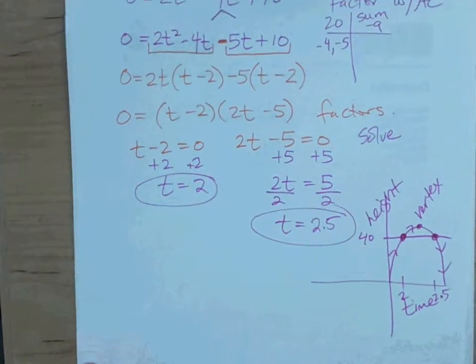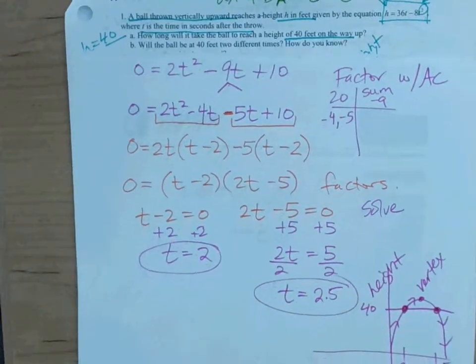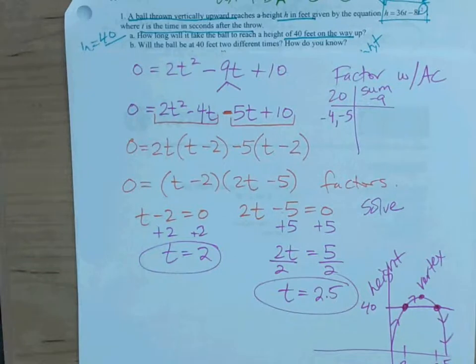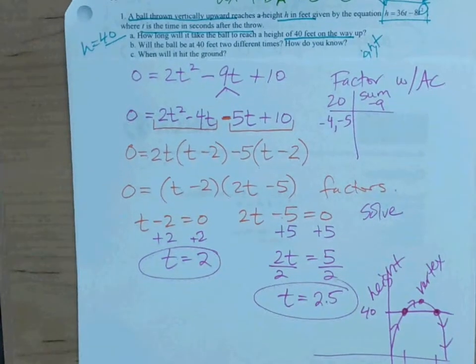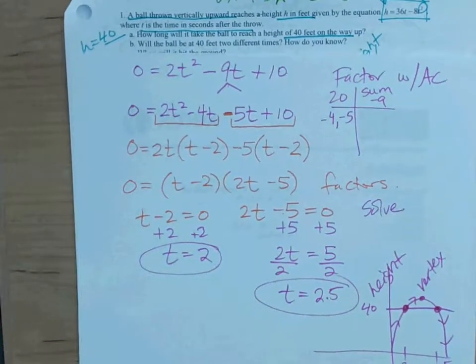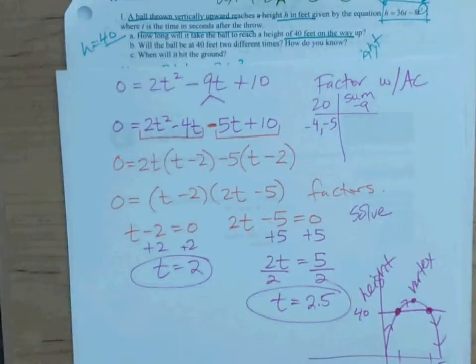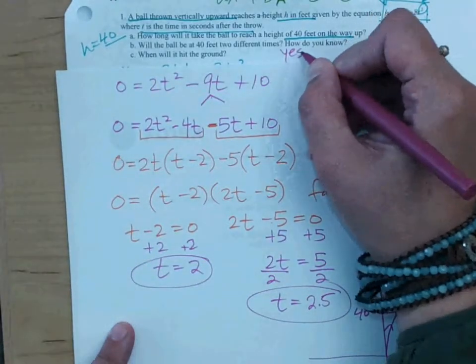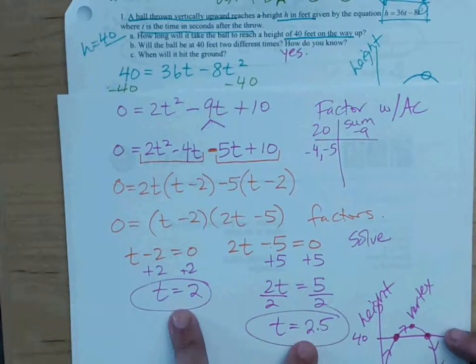Okay, we're not even done with this problem. It's asking more. Will the ball be at 40 feet two different times? What do you think? The answer to that is yes. How do you know? Yeah, and also because we got two different positive times, right?